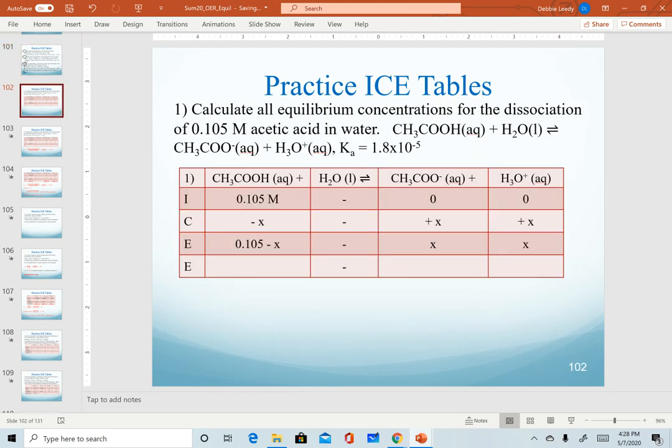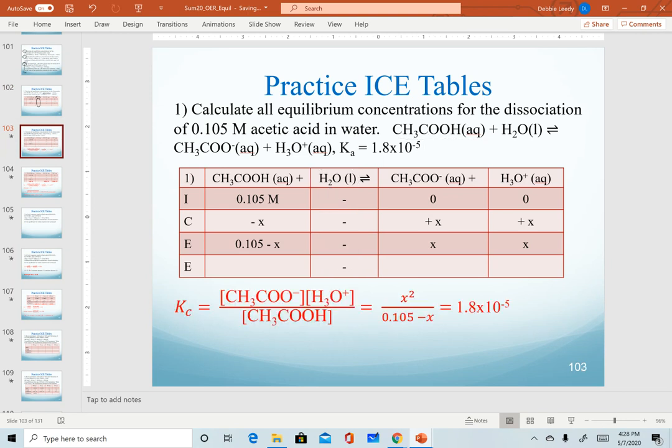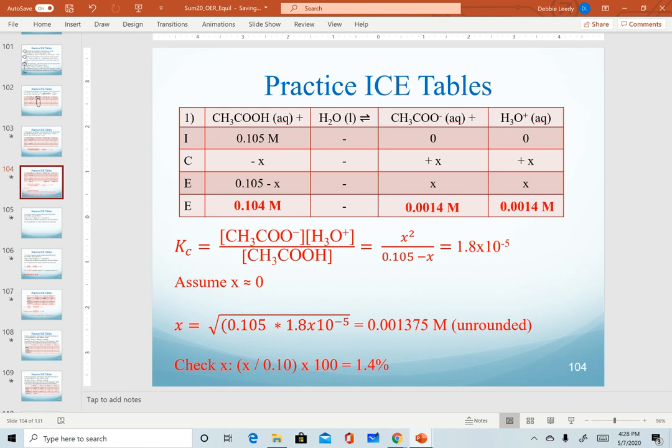For our first example, the variation here is that we're working with an acid, acetic acid, dissociating in water. Remember that liquids and solids have constant concentrations, so anytime we have a pure liquid or pure solid in a chemical equation, we don't need to calculate how much it changes because they're constant. We also don't include solids and liquids in our expression, so when we write our Kc expression, we wouldn't include water in the denominator.